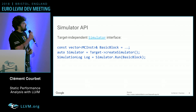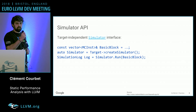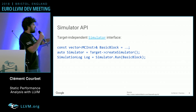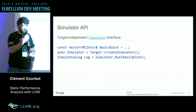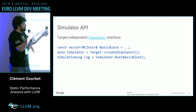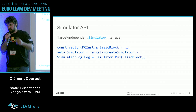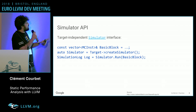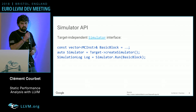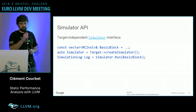In terms of API, we have a target-independent simulator interface. Essentially, you have the target that will create the simulator, and then you just have a run function that takes a basic block of MCInst, spits out the simulation log, and you run analysis on the simulation log.